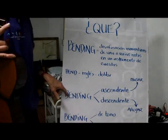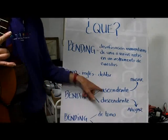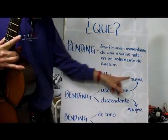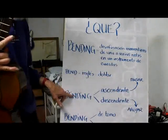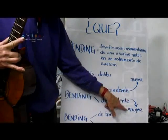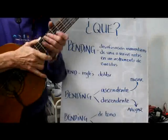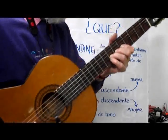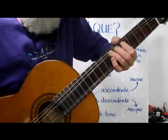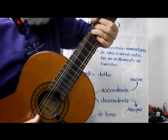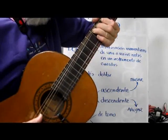Bending can be ascending — tightening the string — or it can be a descending bending — loosening it. For example: here we have an ascending one, and here we have a descending one.